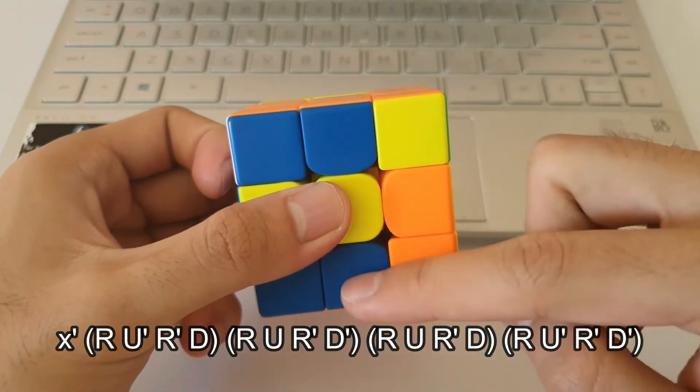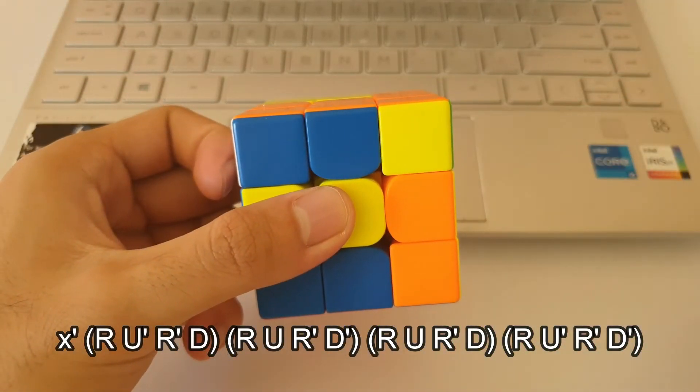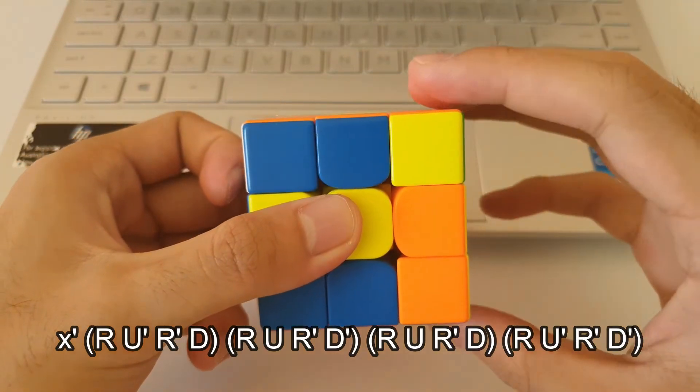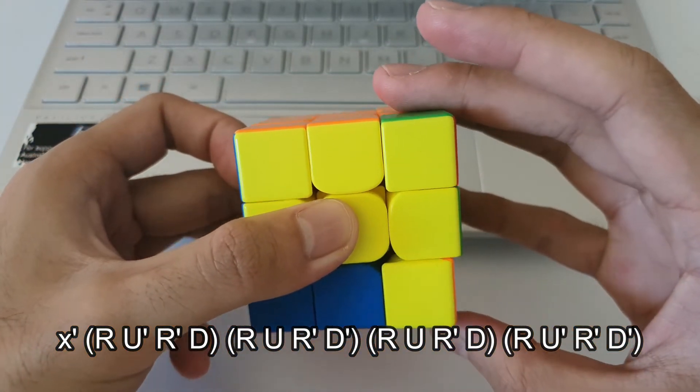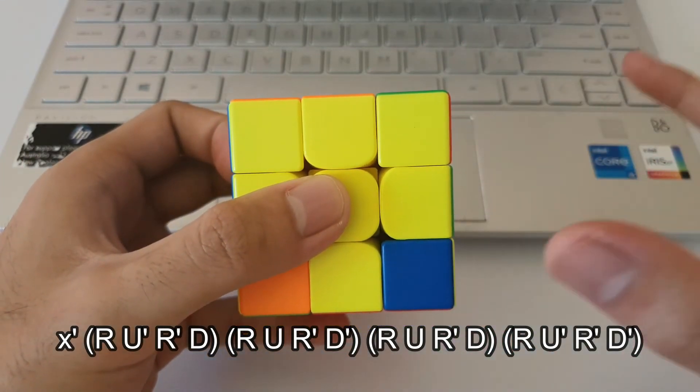notice that both the U and D moves were going towards the right side. And then same for this part as well, R, U, R, D, it's all going towards the left side. So that's the first half.